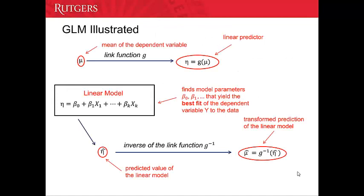The generalized linear model includes three main steps. The first step is to transform the mean of the dependent variable. The second step is to put the transformed dependent variable into the linear model and use linear regression to estimate the parameters, finding values that yield the best fit to the data.